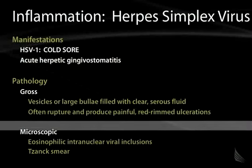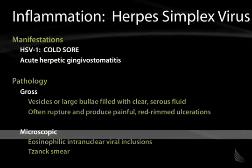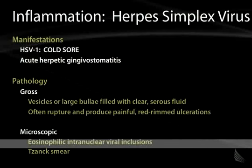Microscopically, if one were to examine the fluid that comes out of these vesicles, or for some reason to biopsy this area, what one would see are cells affected with particular eosinophilic intranuclear viral inclusions that characterize herpes infection, which can often be identified using the Tzanck smear.